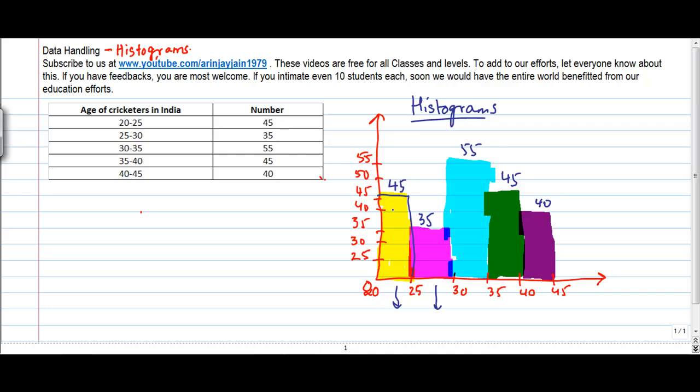but you will ask me what is the use of this histogram let us see if suppose someone were to ask you which is the age group that has maximum number of cricketers. Now can you see this graph and find it out very easily? This graph is the highest so therefore this age group which is 30 to 35 has the maximum number of cricketers